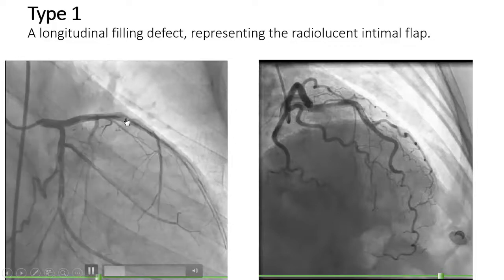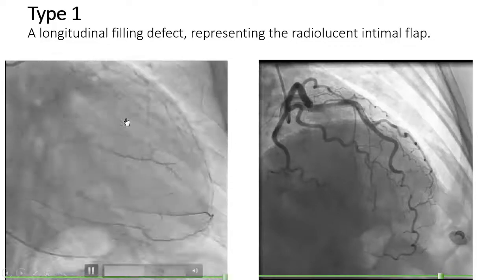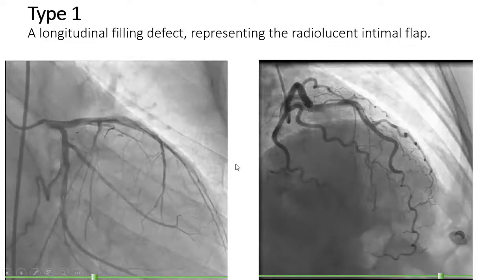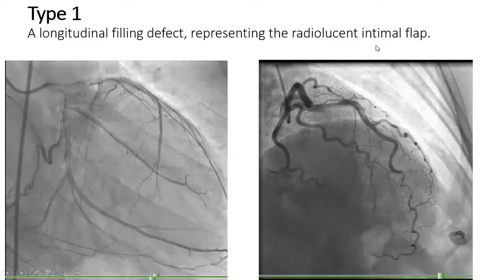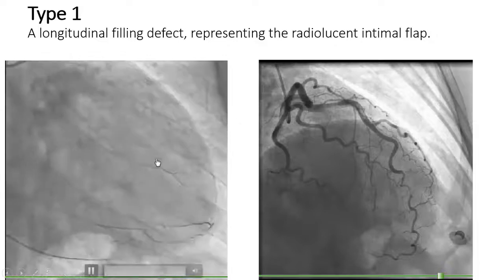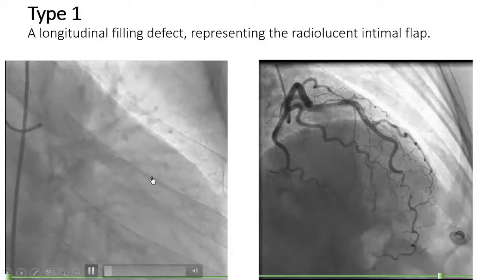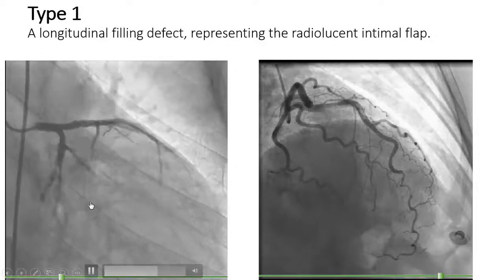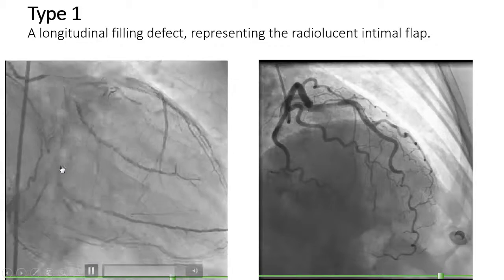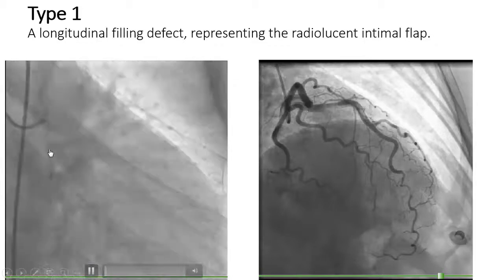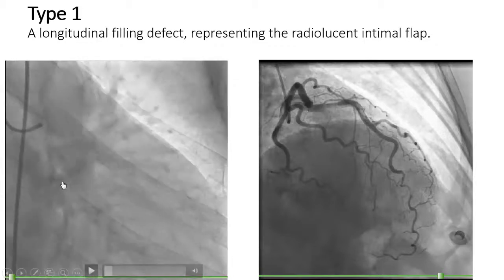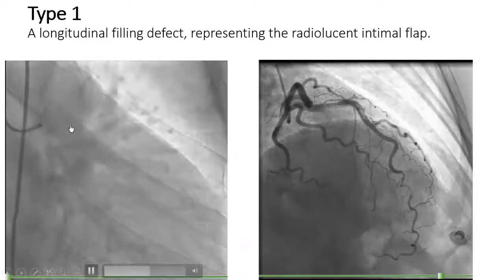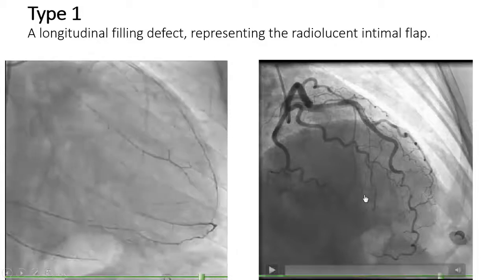There are three types of SCAD. The first type, or type 1, is a longitudinal filling defect representing the radiolucent intimal flap. As you can see in this patient, both LCX and LAD arteries have type 1 dissections. You can see the typical flap and true lumen and false lumen in LCX and LAD.